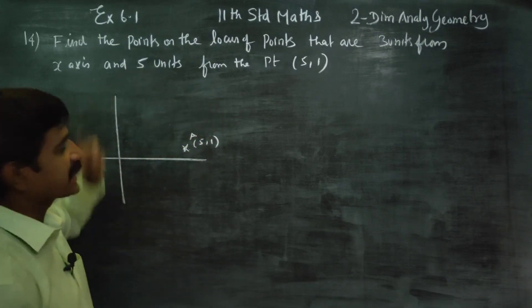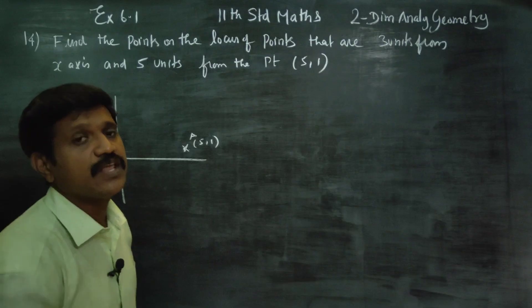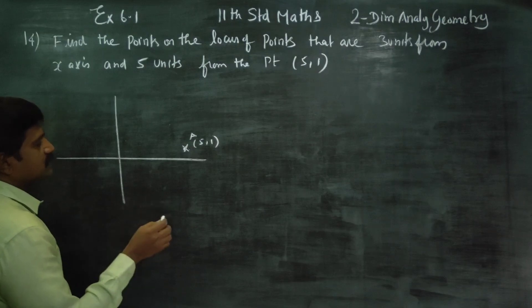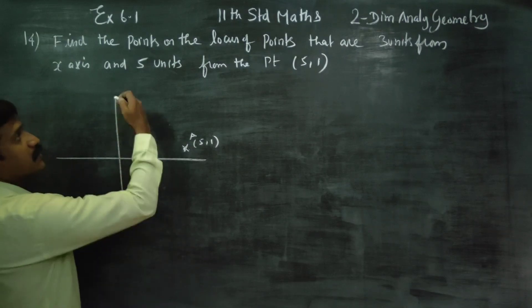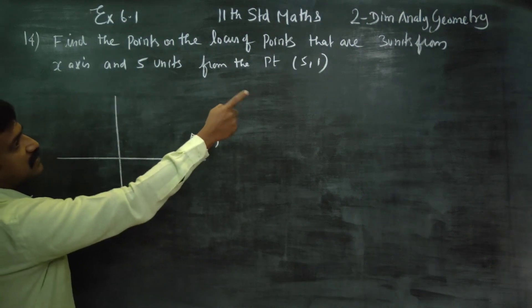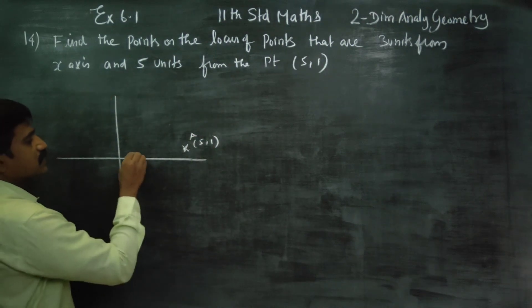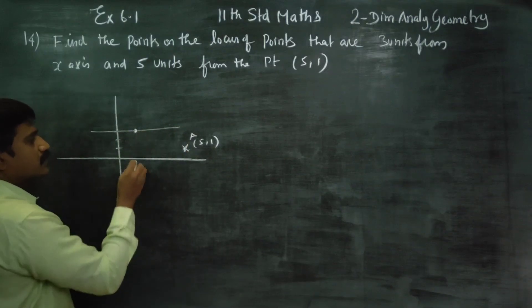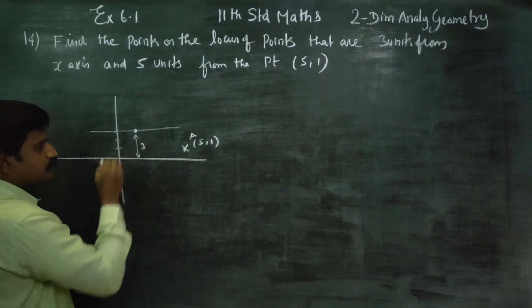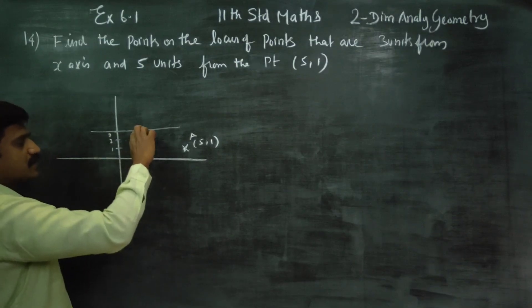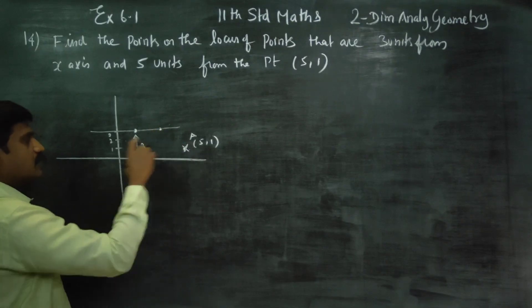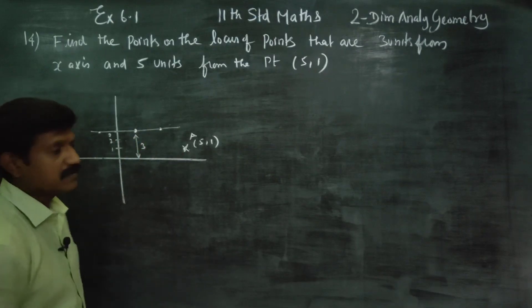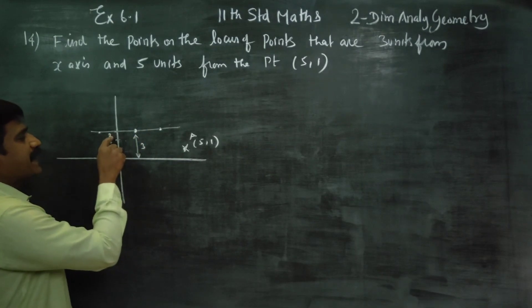The moving point is 3 units from the x-axis. The x-axis distance is measured from the x-axis. 1, 2, 3 units from the x-axis.